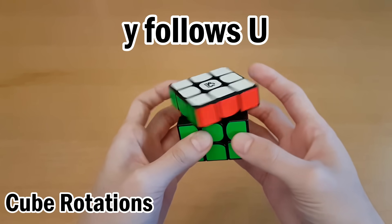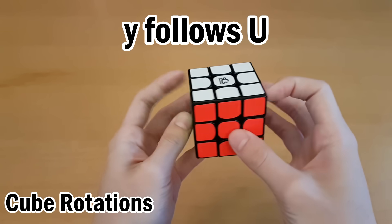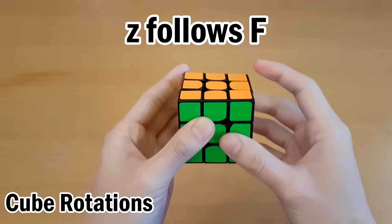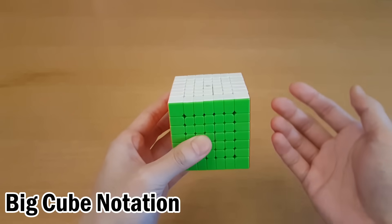y goes in the same direction as U, so U goes this way, so y goes this way. z goes in the same direction as F, so since F goes this way, then z goes this way. On larger cubes like 4x4 and up,